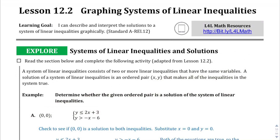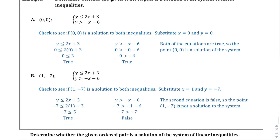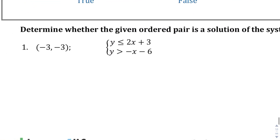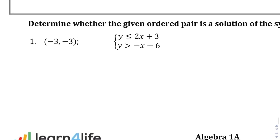We're on lesson 12.2, page 53. You can read the explore section on your own, but what you should get from it is: to find whether or not the point negative 3 comma negative 3 is a solution to the system of inequalities, just plug it in. If it comes out to be a true statement for both inequalities, then it is a possible solution.